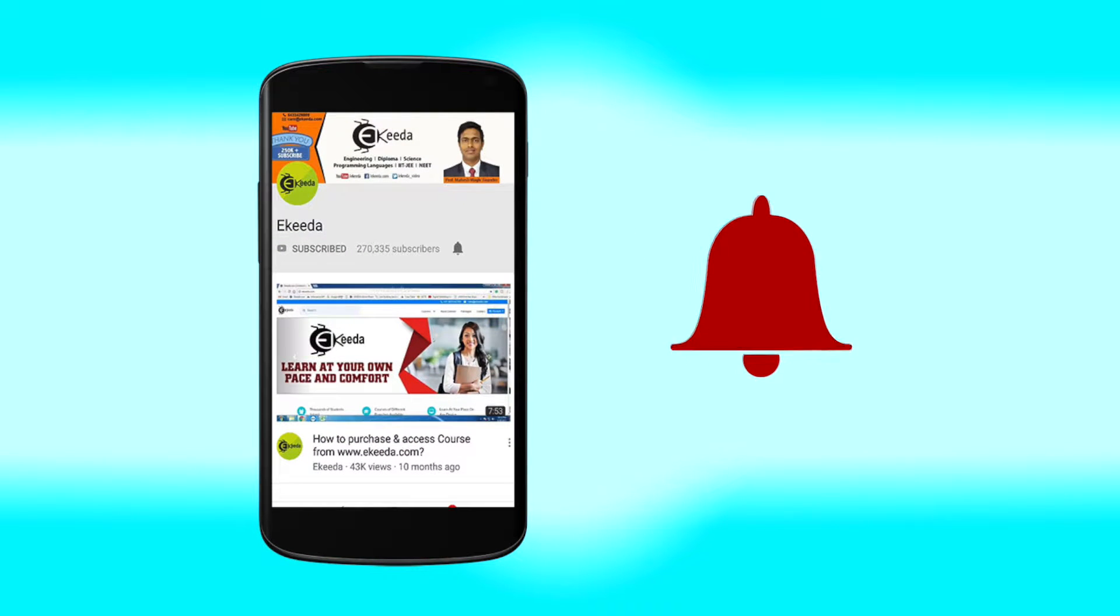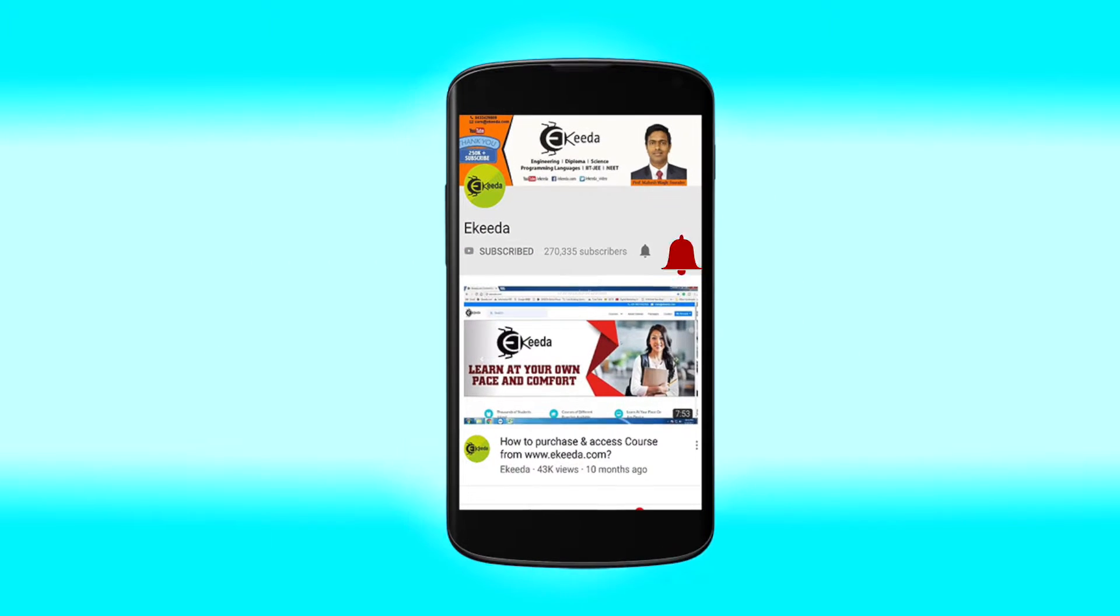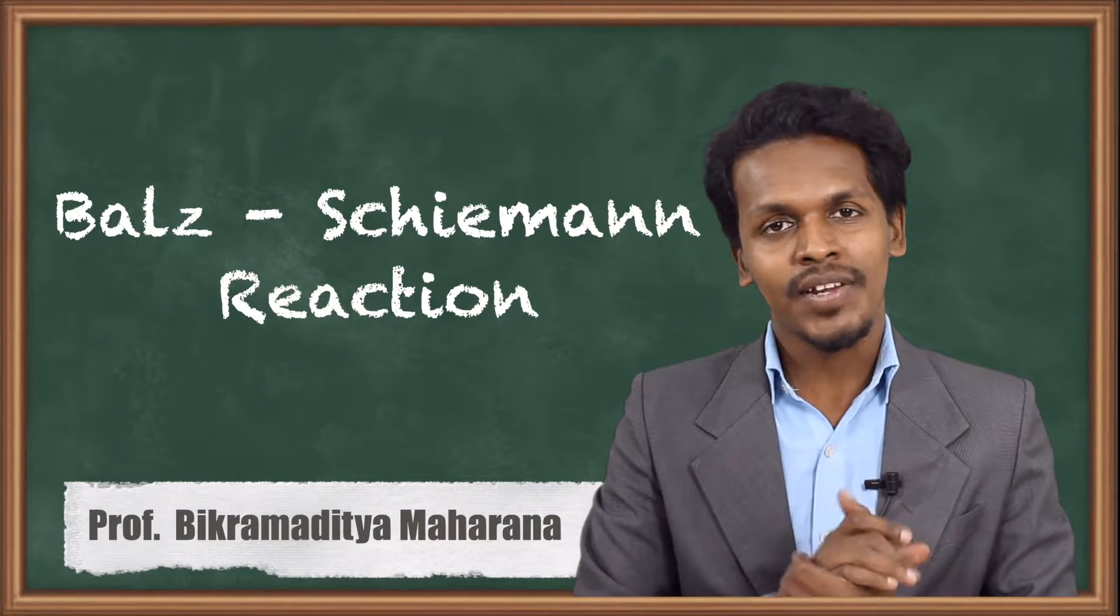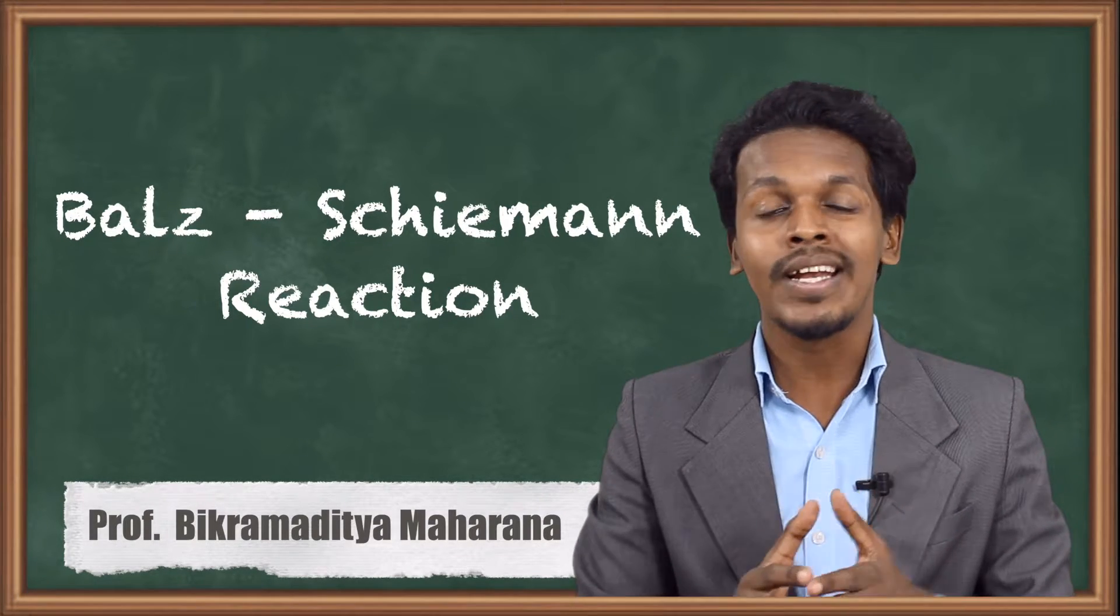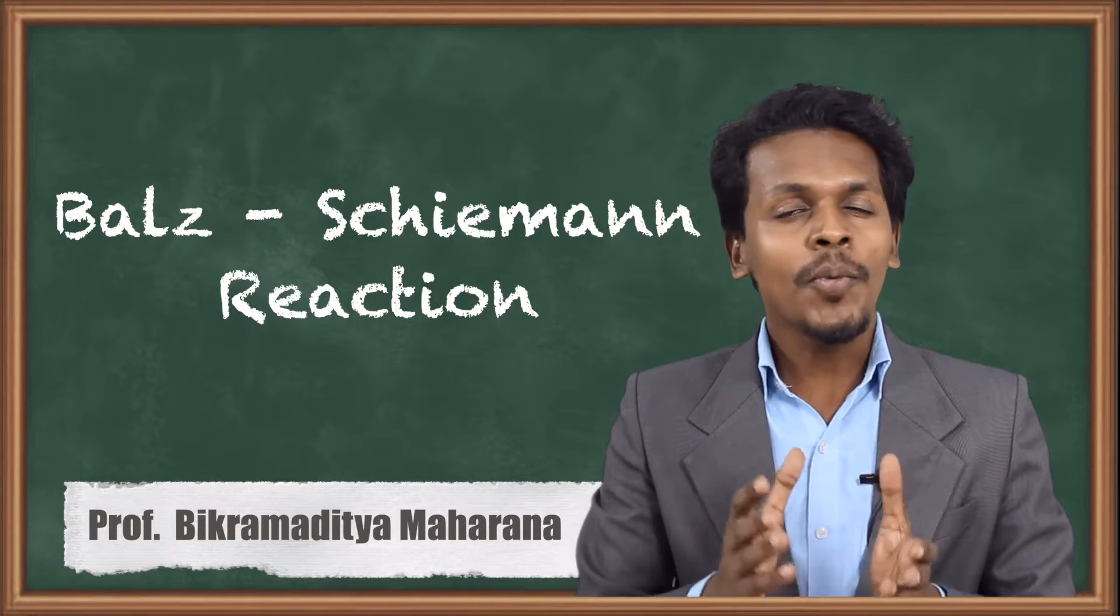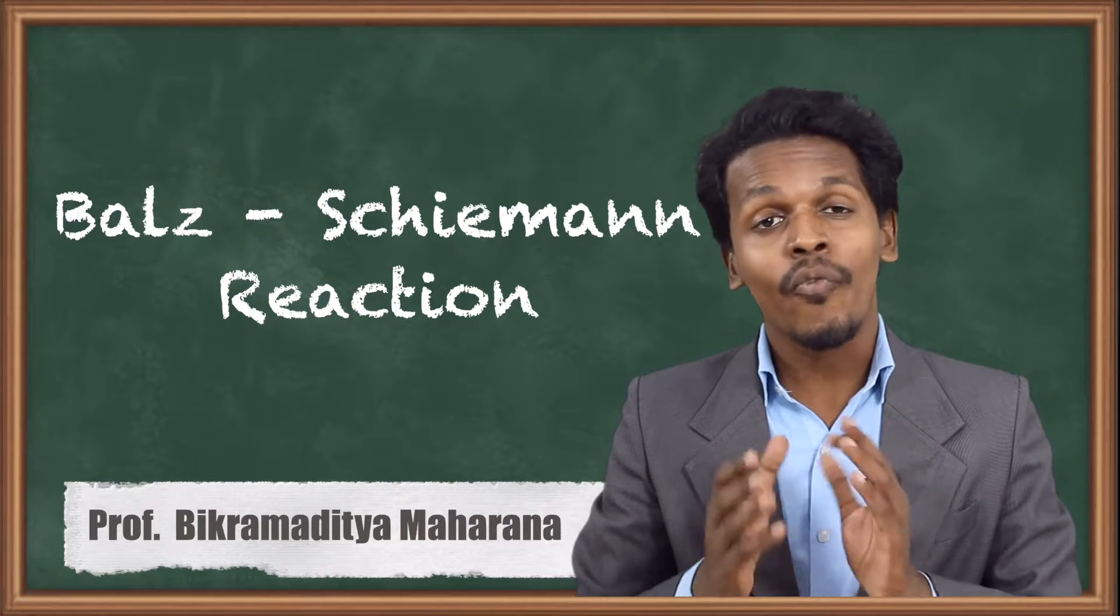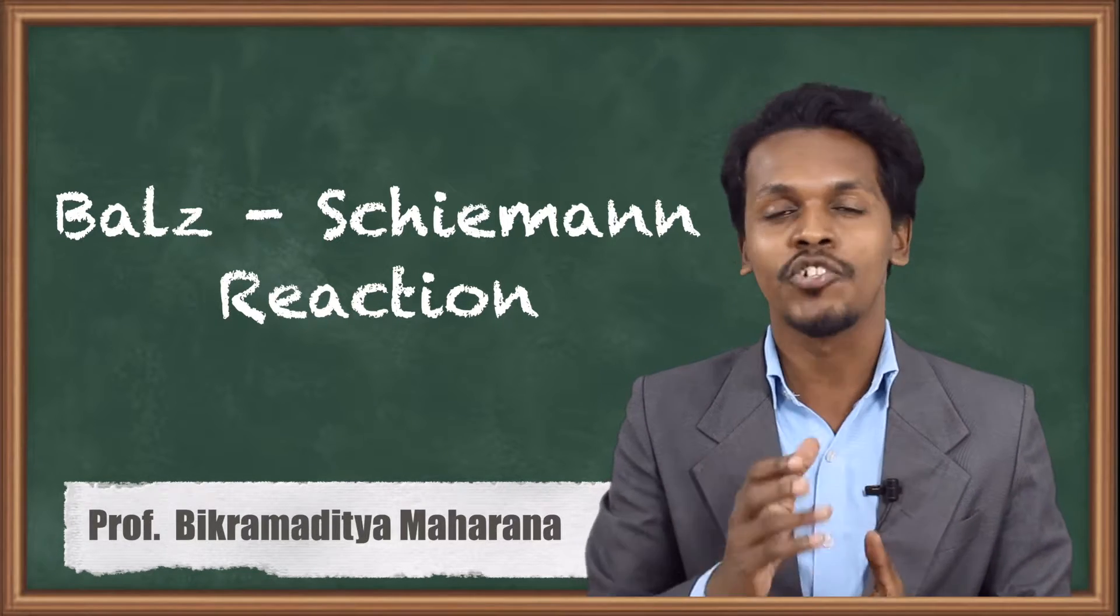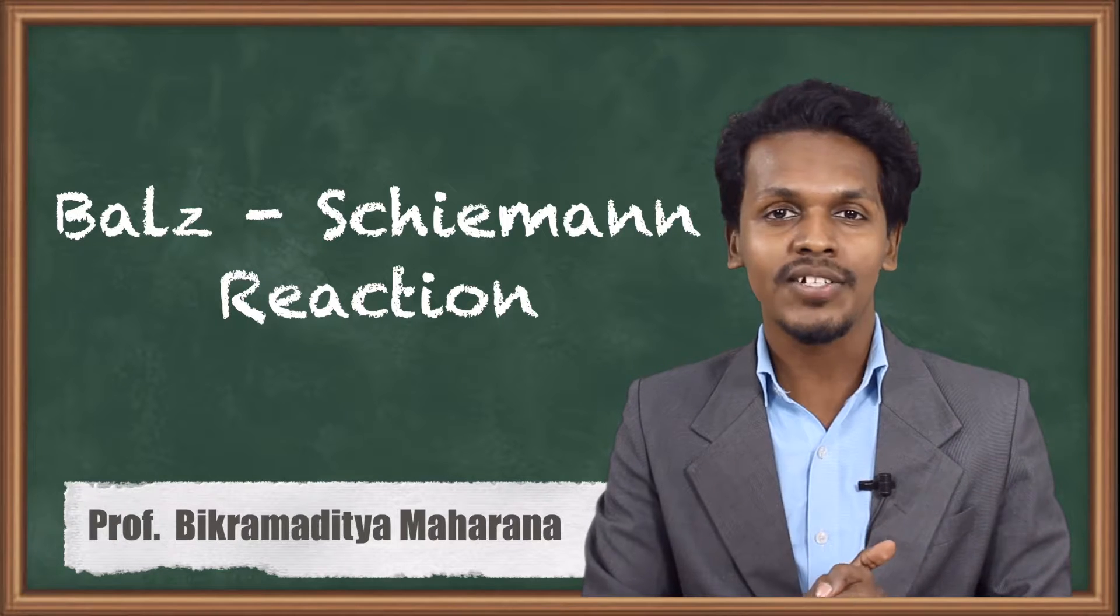Click the bell icon to get latest videos from Ikeda. So friends, in the previous lecture we discussed Sandmeyer's reaction, and in that case we got to know how we can prepare chlorobenzene, bromobenzene, as well as cyanobenzene. But talking about the preparation of fluorobenzene, for that we have to use a different method, and this different method is basically known as Balz-Schiemann reaction.